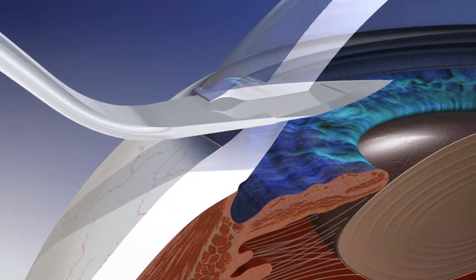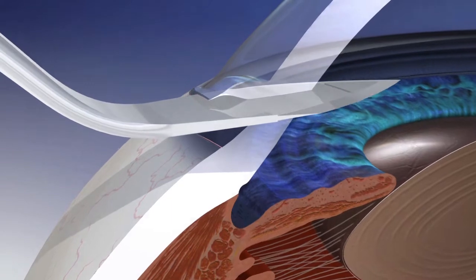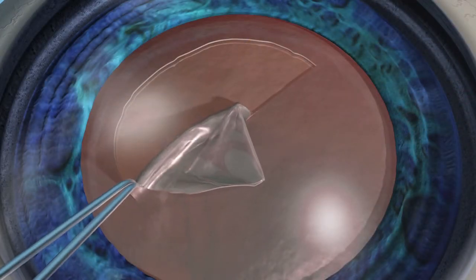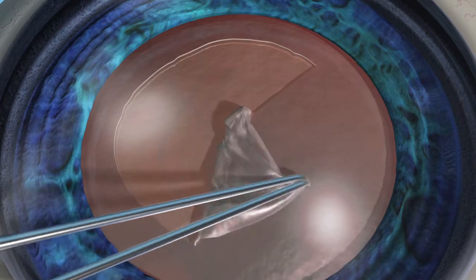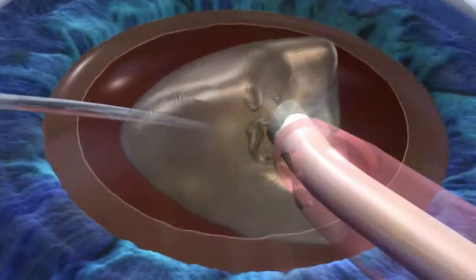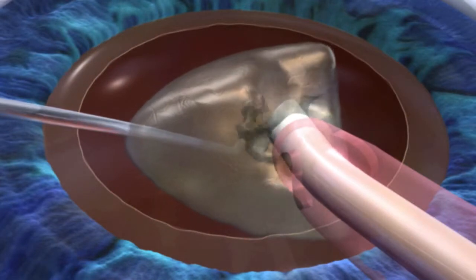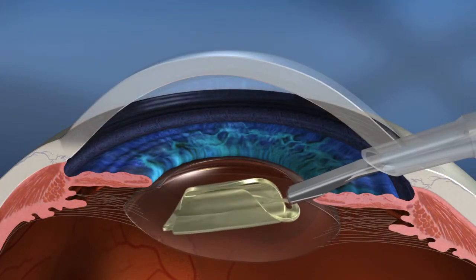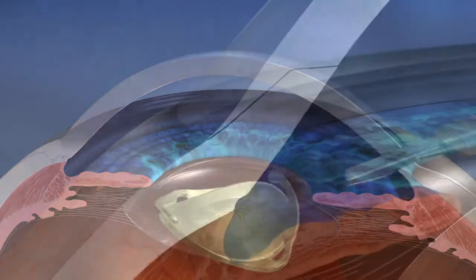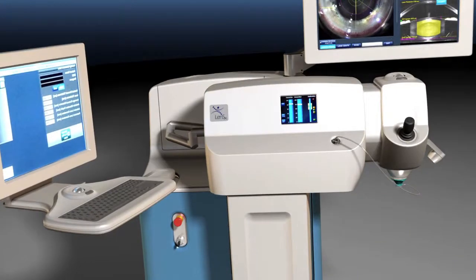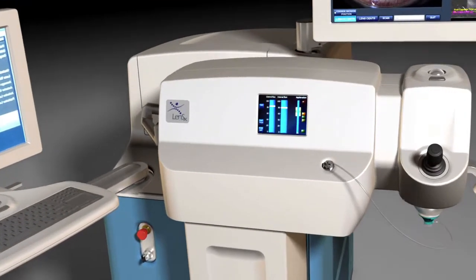Cataract surgery involves corneal incisions, capsular excess — a circular hole in the capsular bag — lens fragmentation, phacoemulsification, intraocular lens insertion, and incision closure. The LensX laser can assist with some of the most challenging steps.